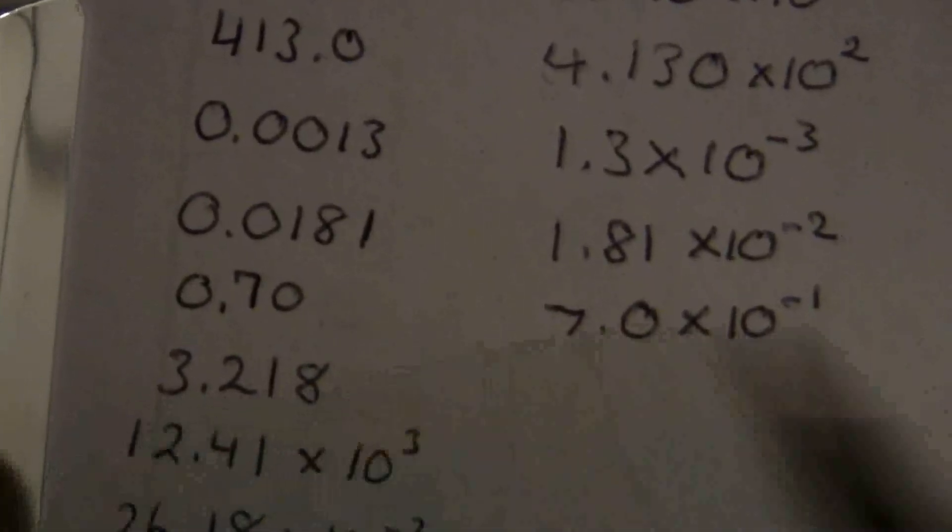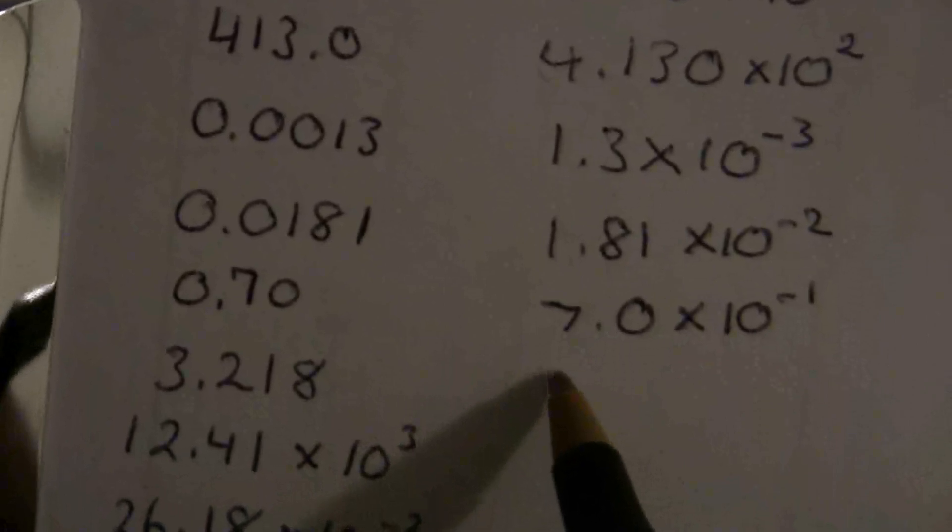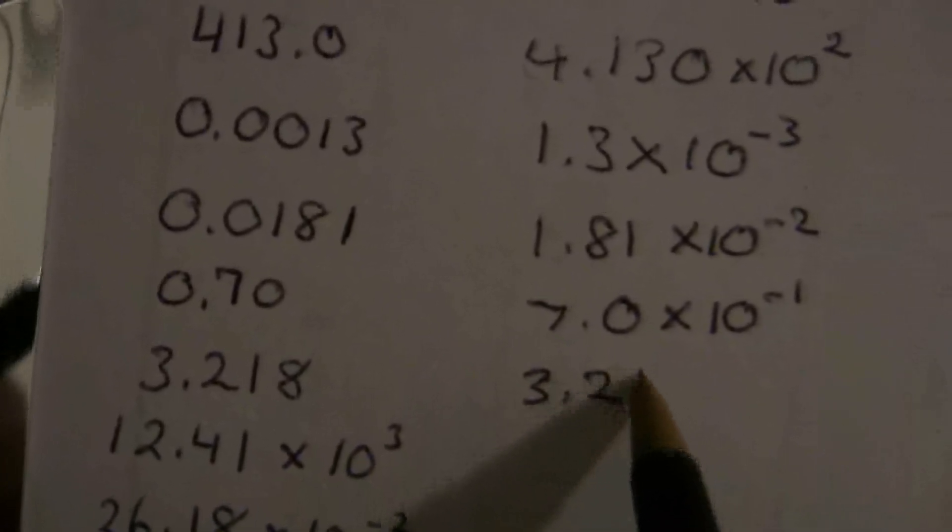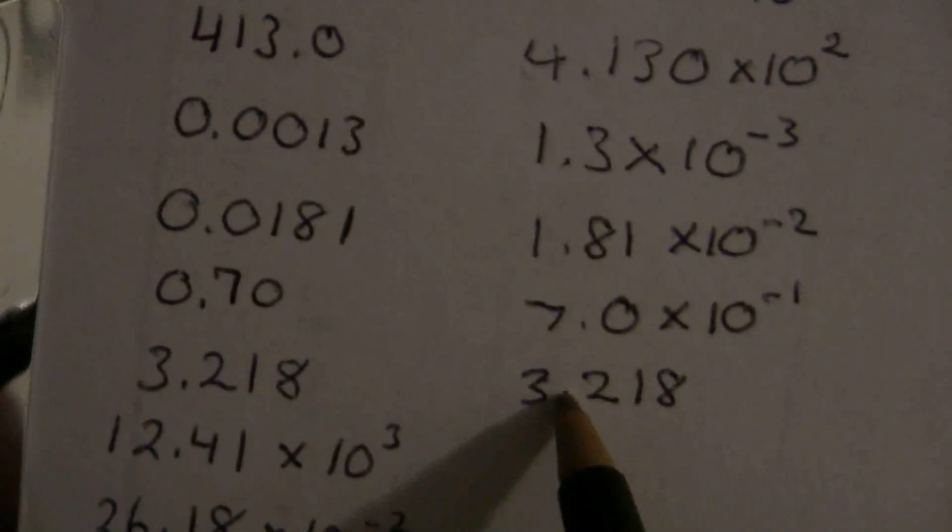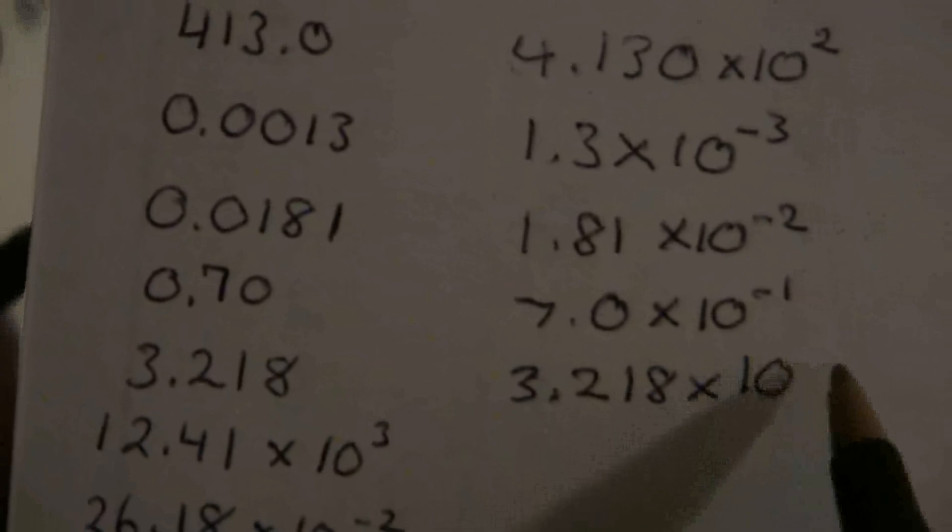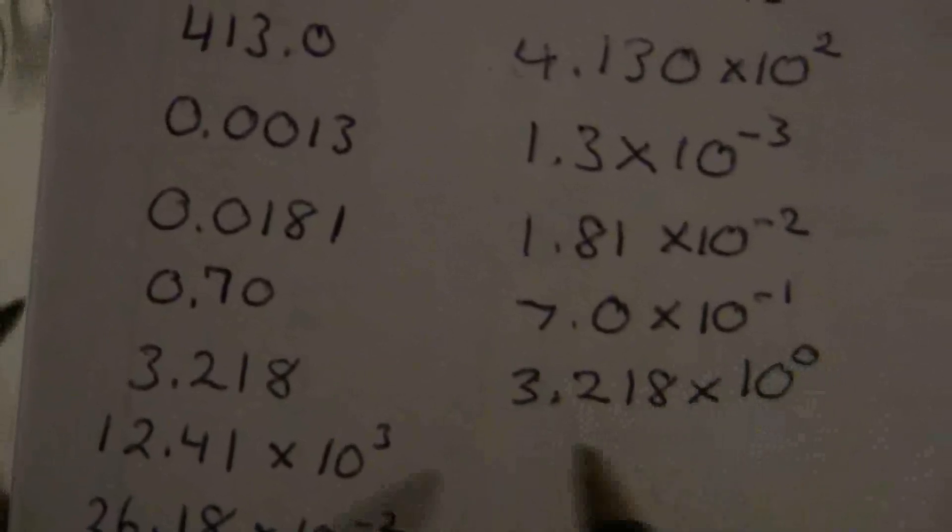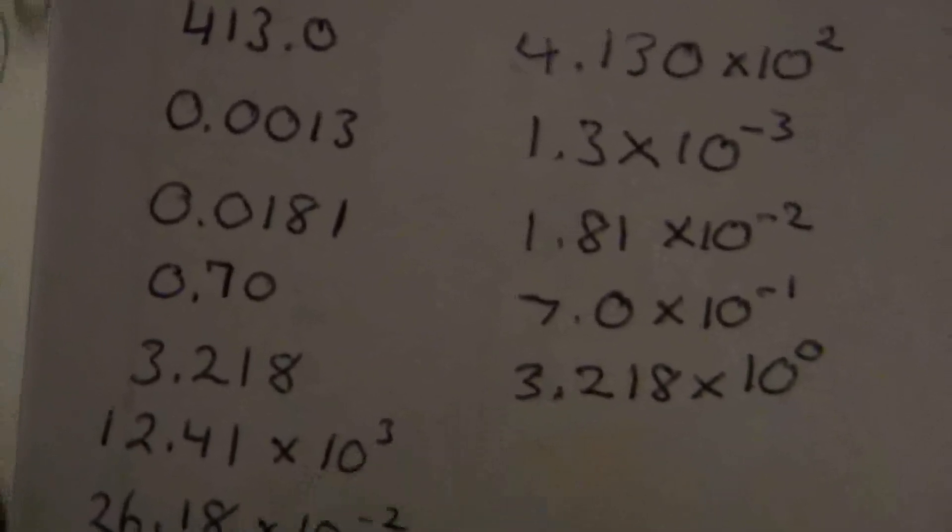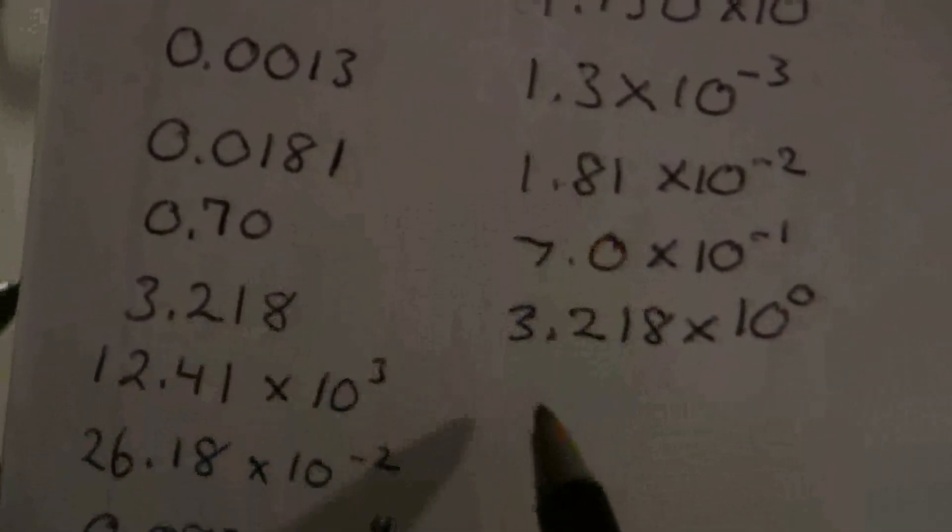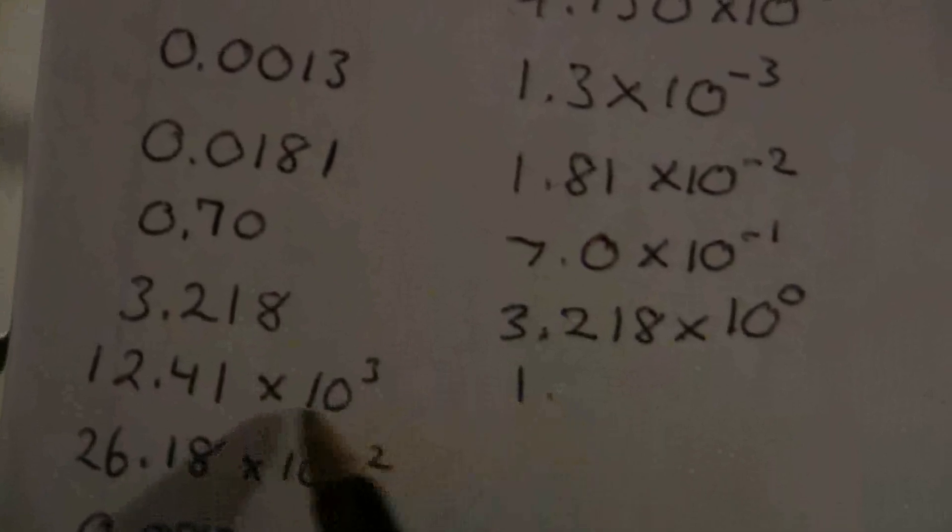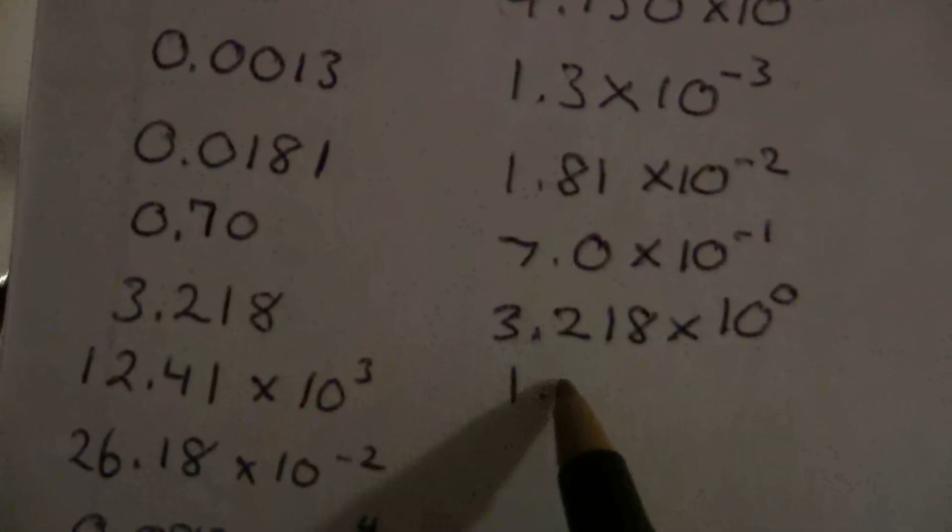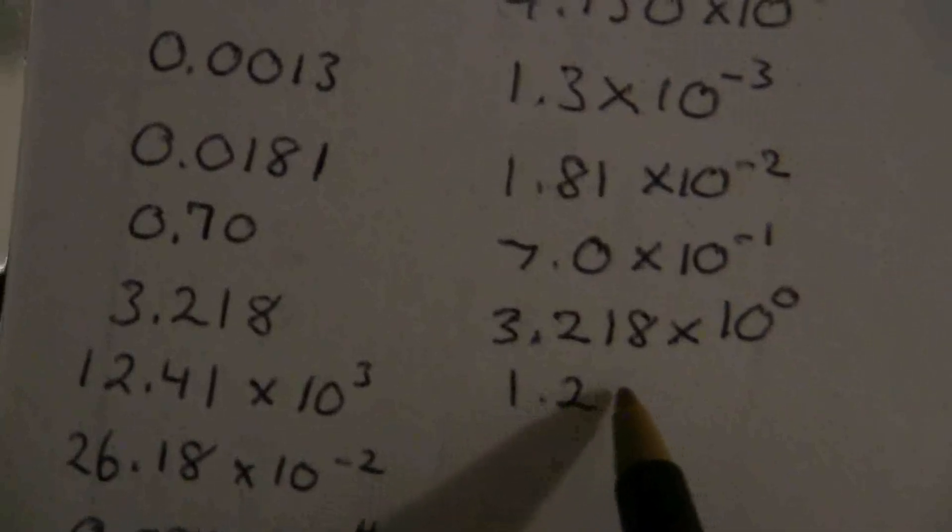Here we have 0.70, seven point zero times ten to the negative one. Now here we have 3.218. This one is already in the right place, and so what we can do is just say times ten to the zero, meaning we don't need to move it either to the left or to the right.